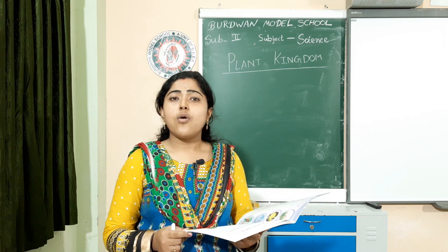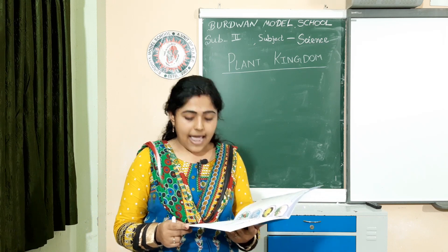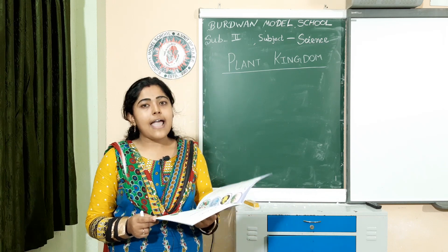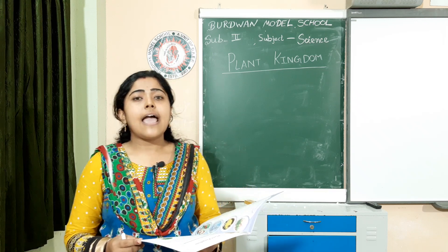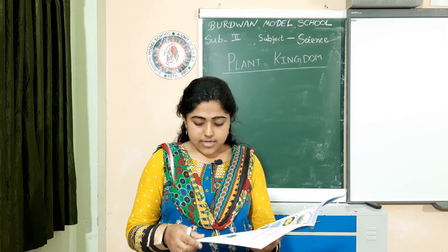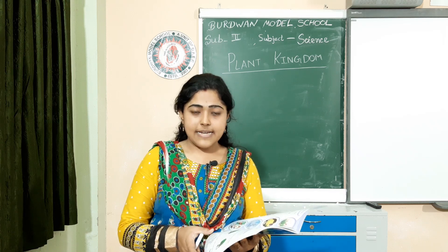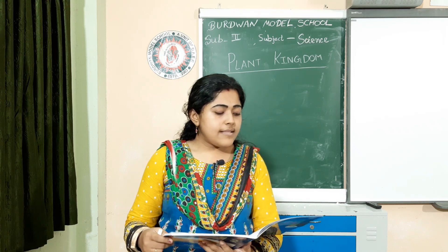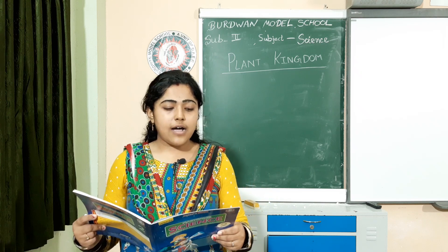Shrubs are small plants which have a hard and thin stem with many branches. They have many examples like rose, cotton plant, henna plant, etc.